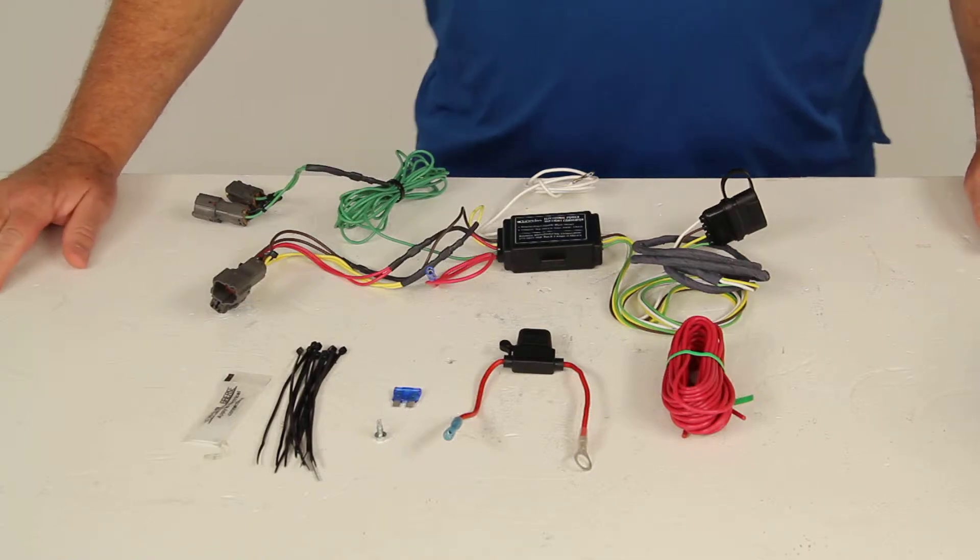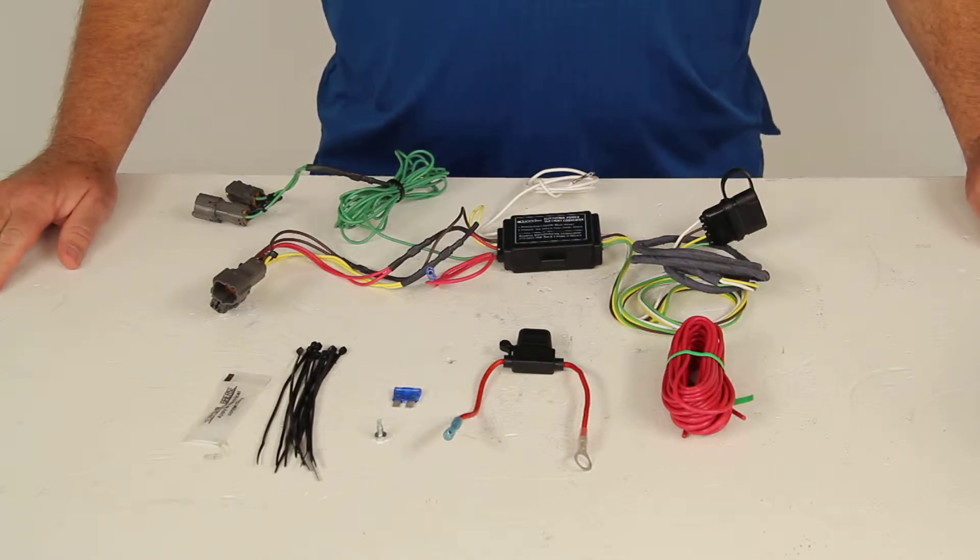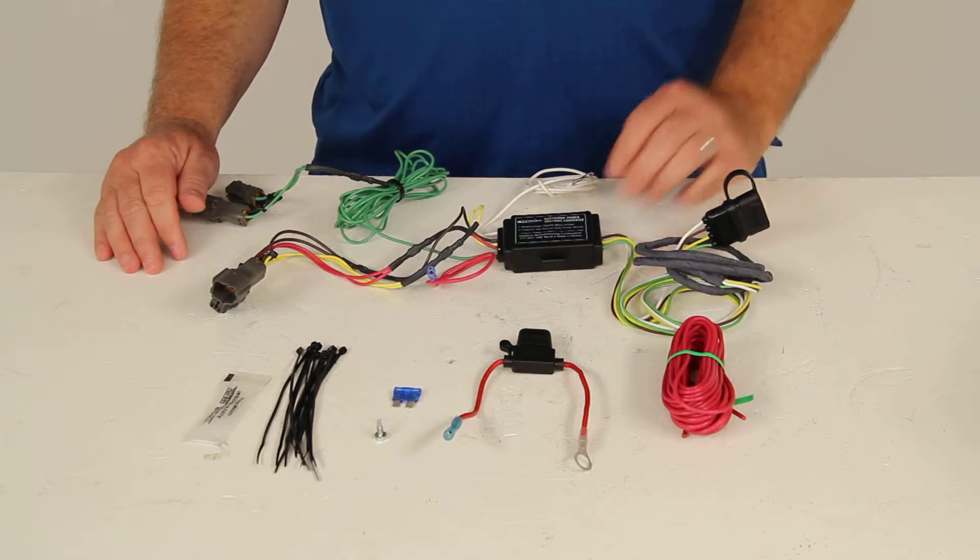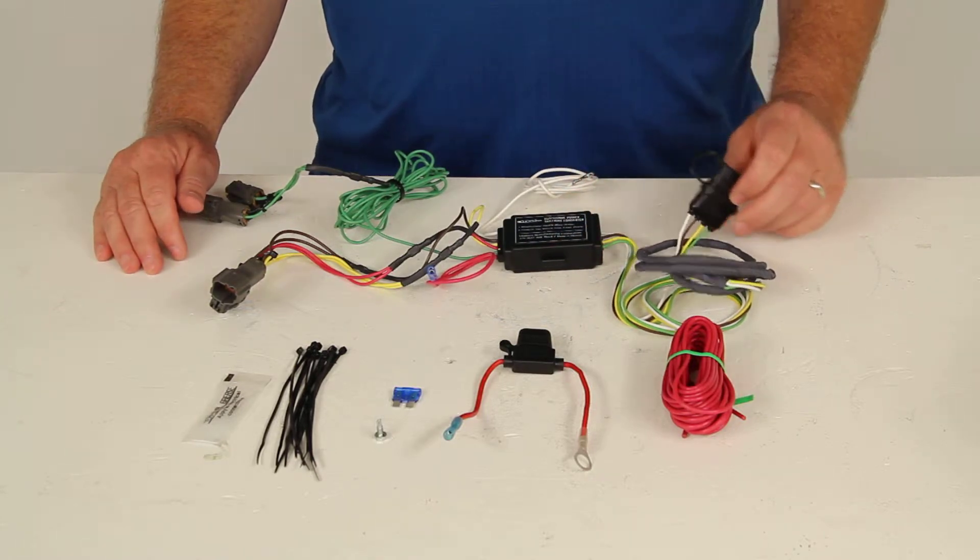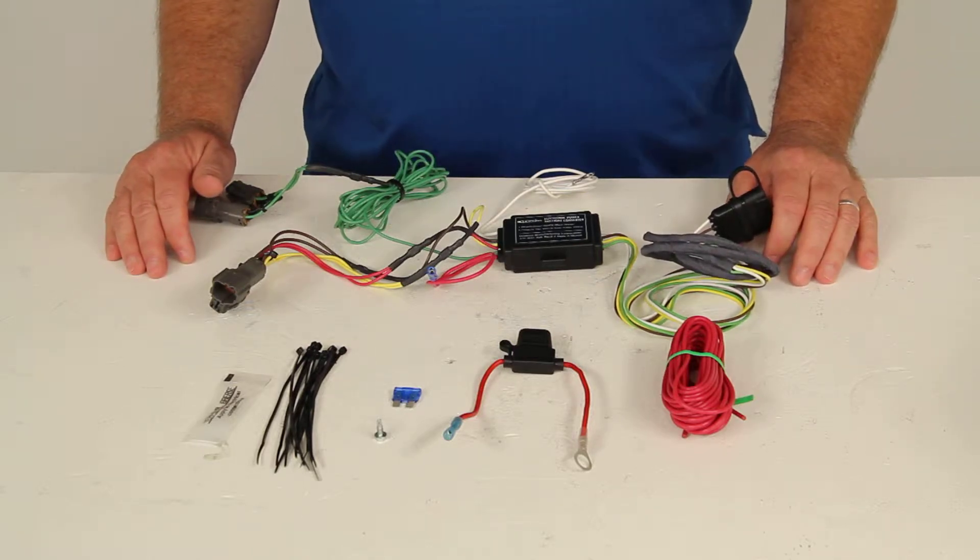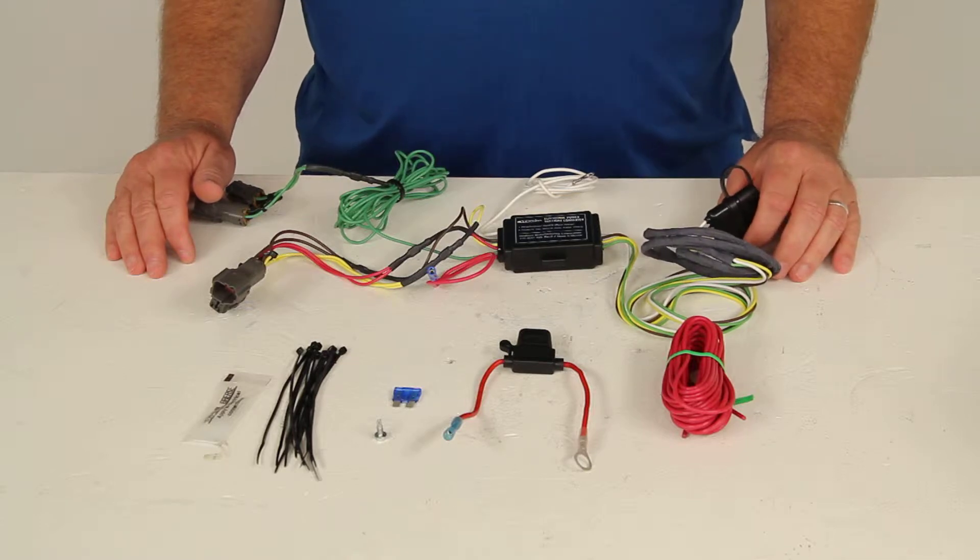Today we're going to review part number HM11143820. This is the Hopkins plug-in vehicle specific wiring harness with the four pole trailer connector. This is a custom fit part number designed to fit the Kia Sorento without the tow package starting in 2014 models.